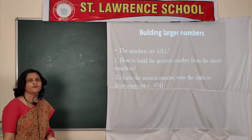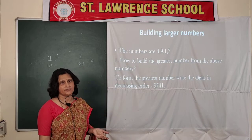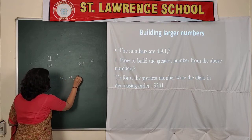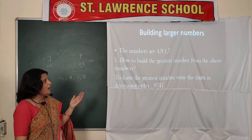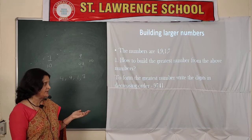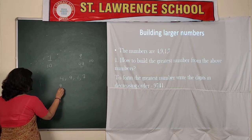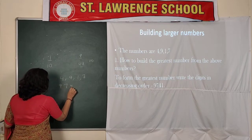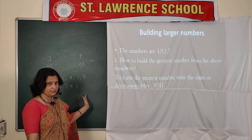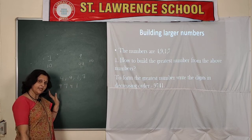Now, building the larger number from given digits. Suppose the digits given are from the number 4917 and you have to make the greatest number from them. You have to write the digits in decreasing order: 9, then 7, then 4, then 1. When you arrange digits in decreasing order, the number formed will be the largest number.